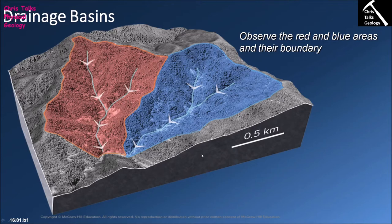Rivers come in two main forms. There are perennial rivers which flow all year round — think of a river like the Mississippi. And there are also ephemeral rivers, which exist only for short periods of time, due to things like large thunderstorms or snow melting during the spring, creating a load of water coming down off the mountains. The river temporarily exists, and then once the water is gone, it's done.